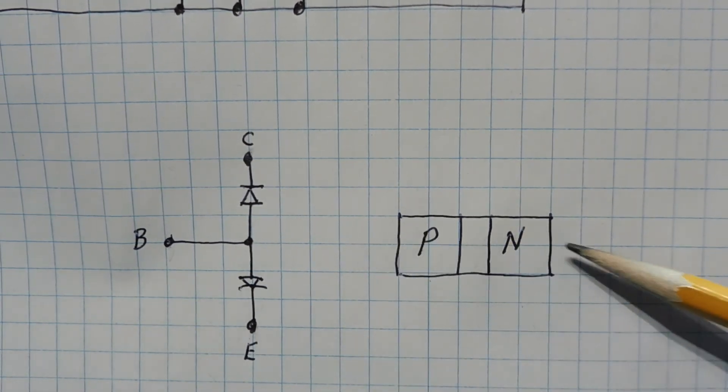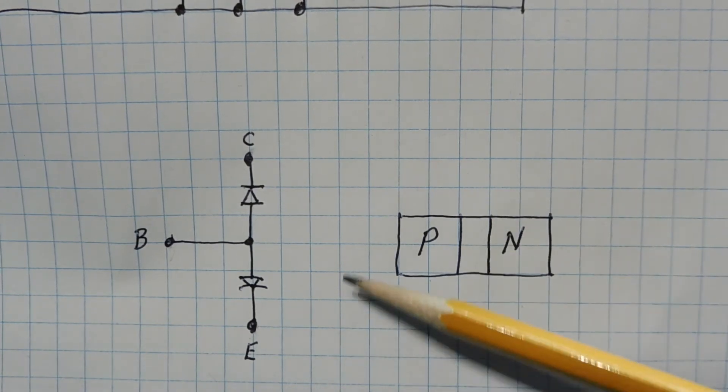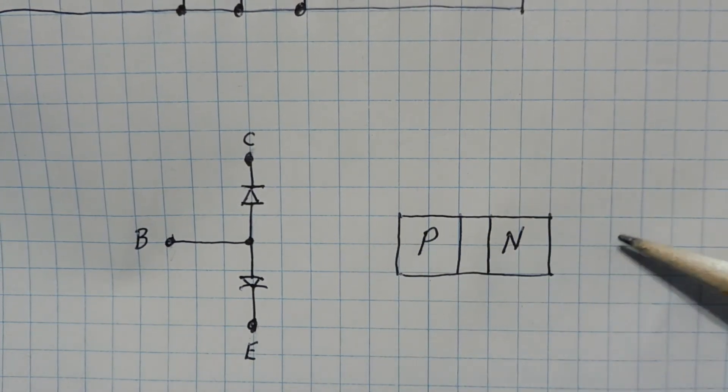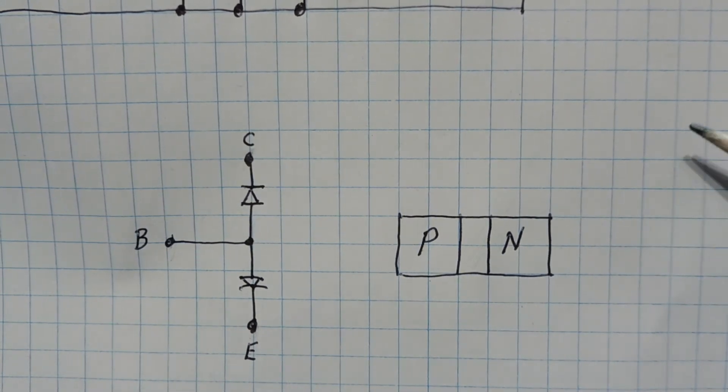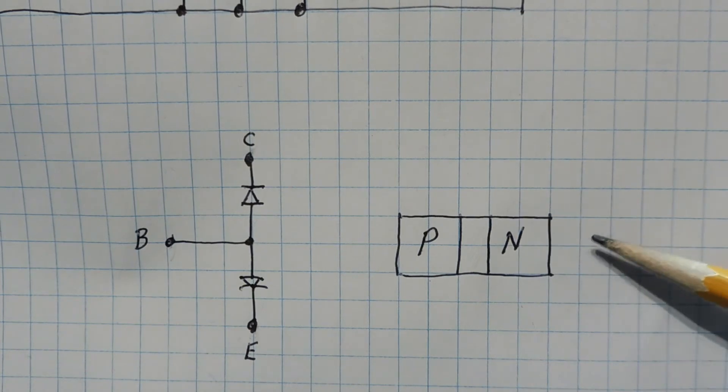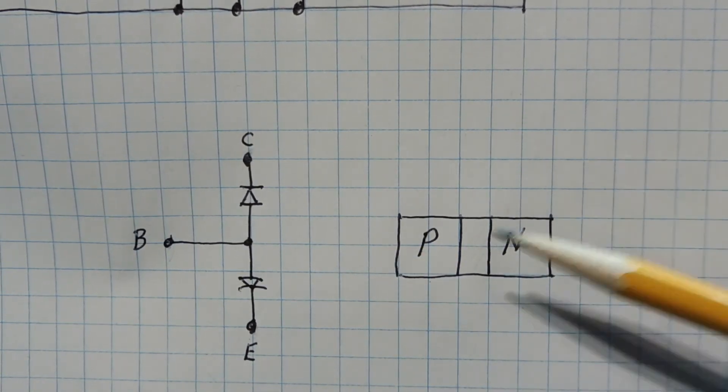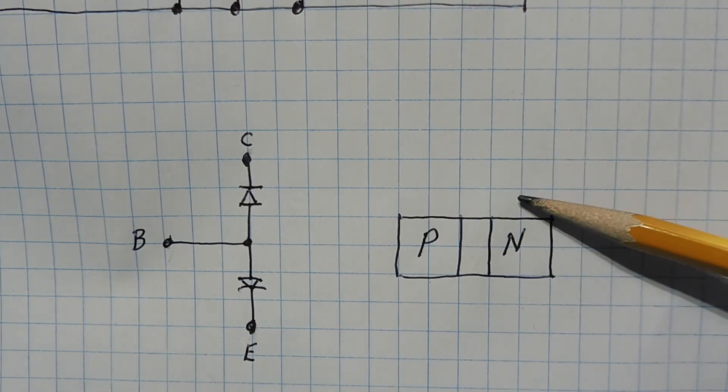When we forward bias a PN junction, the depletion zone in the middle will narrow, which will enable current to flow in the forward direction. When we reverse bias a PN junction, the depletion zone will widen and let very little current flow in the reverse direction. Also when we reverse bias a PN junction, we get a capacitance between the P and N material.